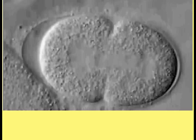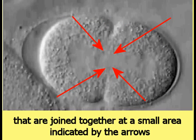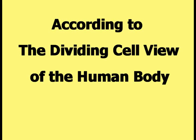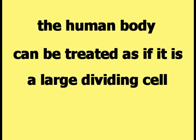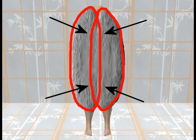This picture shows one stage of the cell division process. There are two mostly complete single cells joined together at a small area indicated by the arrow. According to the dividing cell view of the human body, the human body can be treated as if it is a large dividing cell, located as shown in this picture. The elliptical shape of each new cell encloses most of one half of the human body, and a small section of each cell also encloses a small area of the opposite side of the body, as indicated by the arrows.